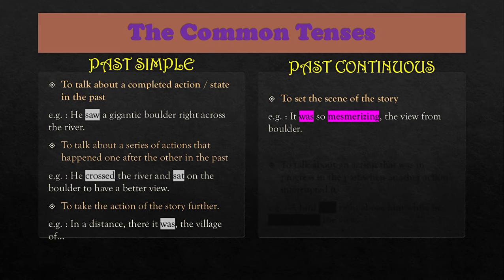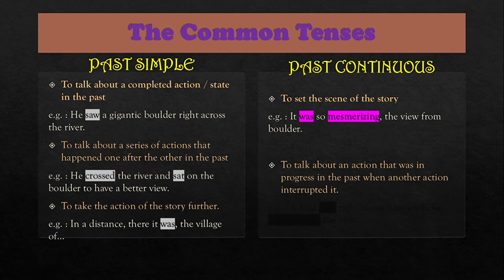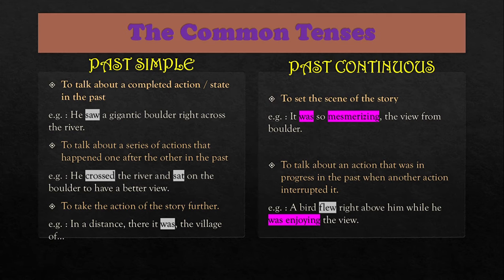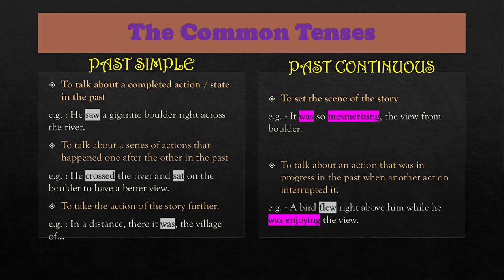Next, we use past continuous to talk about an action that was in progress in the past when another action interrupted it — kita tengah buat something, tiba-tiba benda lain jadi. For example: 'A bird flew right above him while he was enjoying the view.' The bird flew is the interrupted action, while 'he was enjoying the view' is the progressive action.